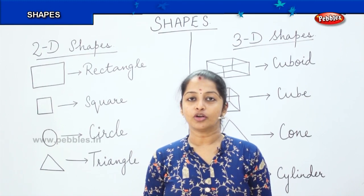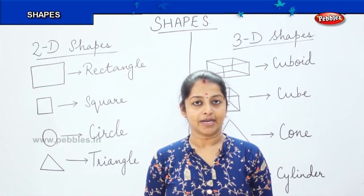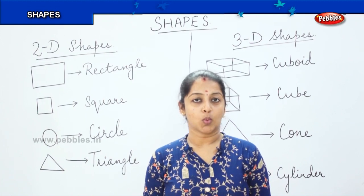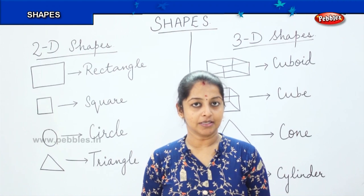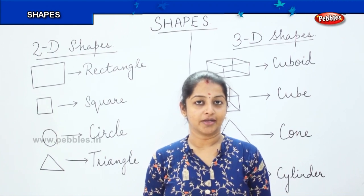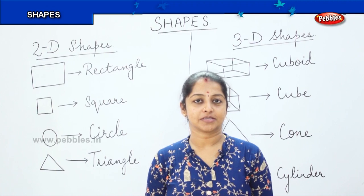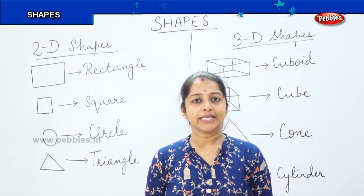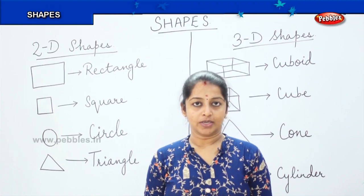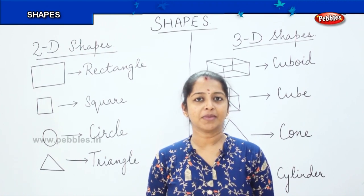We see a lot of shapes around us, right? It can be a square, a rectangle, a circle, a triangle, cuboid, dice and so many shapes. So have you ever thought why there are different shapes around us? Can you tell me a reason?